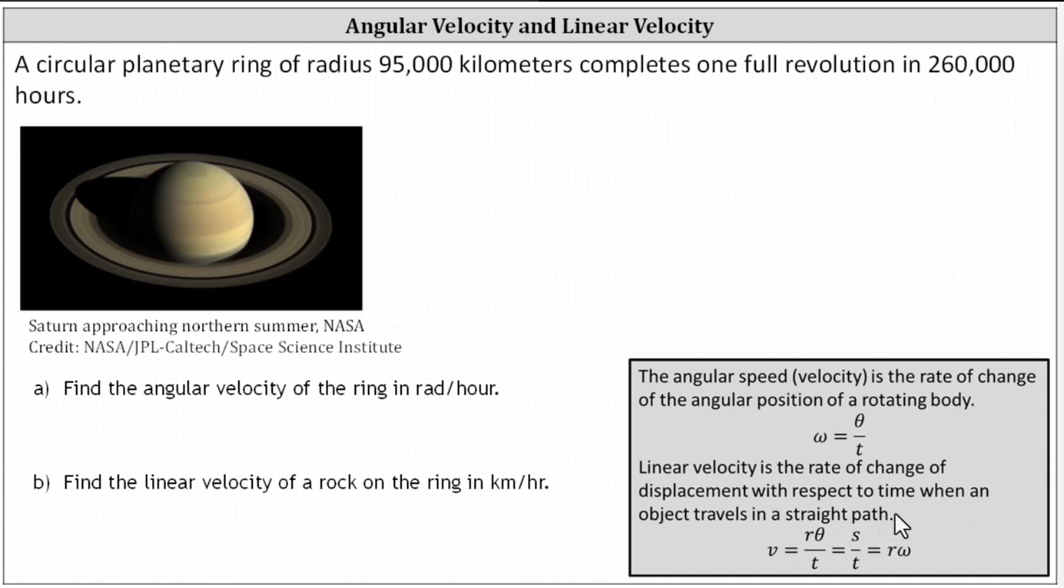There are several formulas for linear velocity. The linear velocity v equals the radius r times theta divided by t. If we let s equal arc length, we call arc length equals r times theta, and therefore we can express the linear velocity as arc length s divided by t. And because theta divided by t equals the angular velocity omega, we can also express the linear velocity v as r times omega.